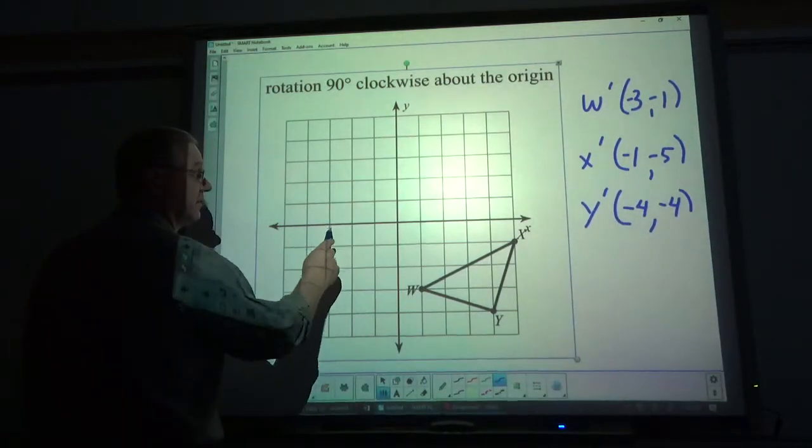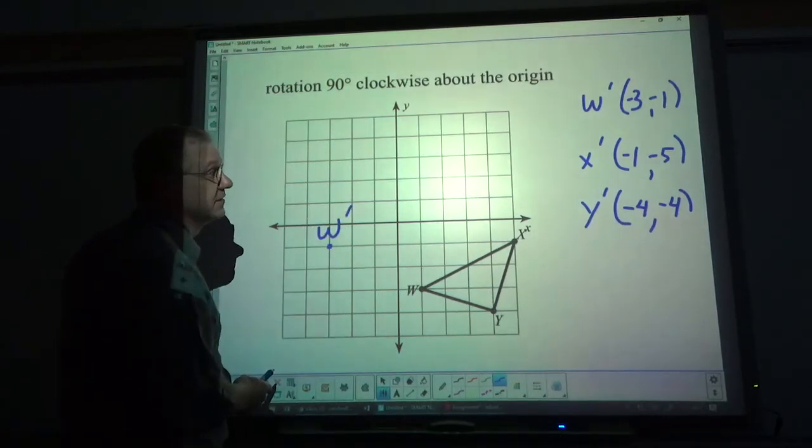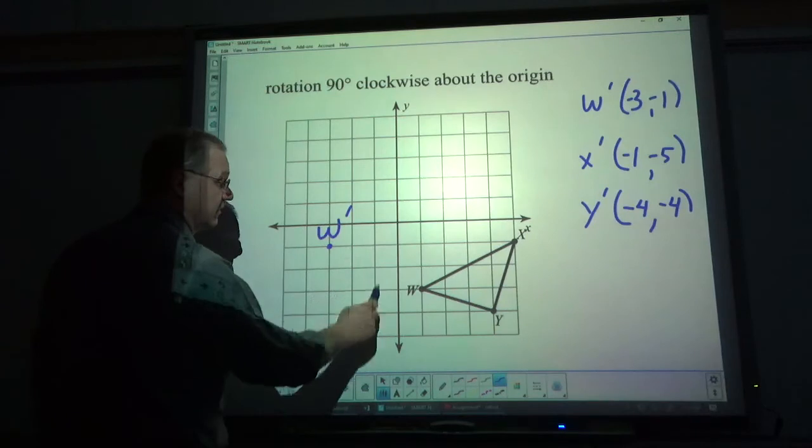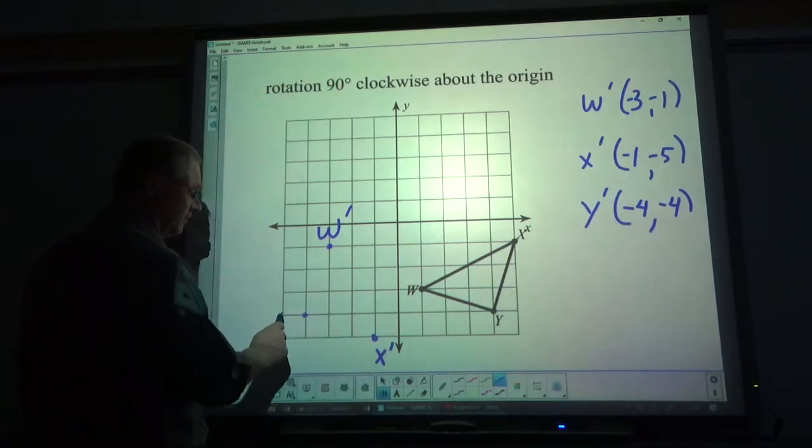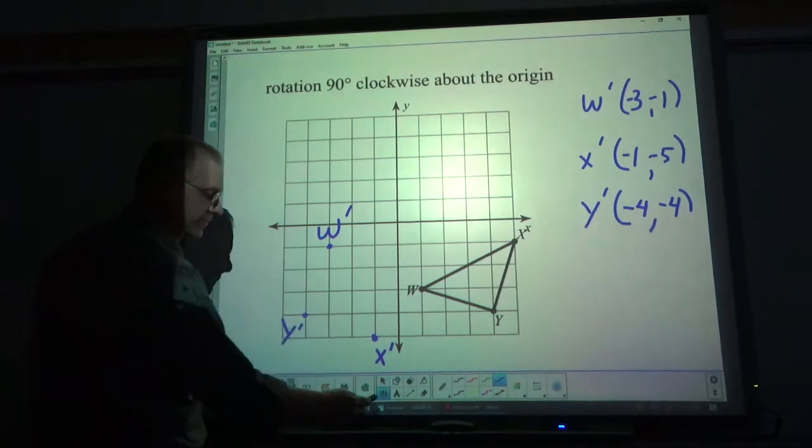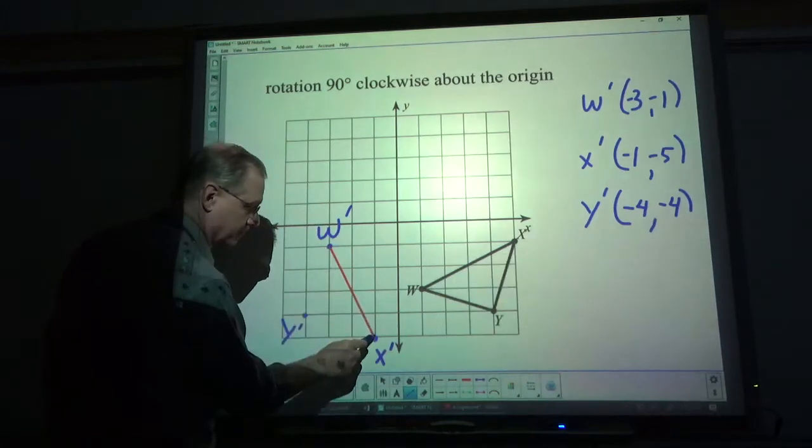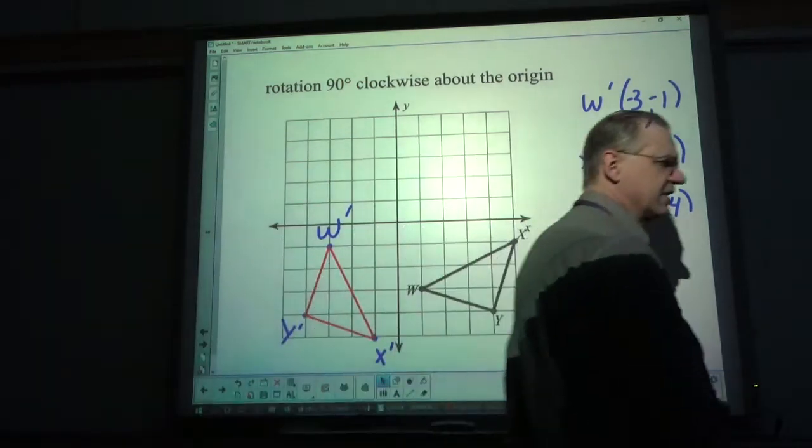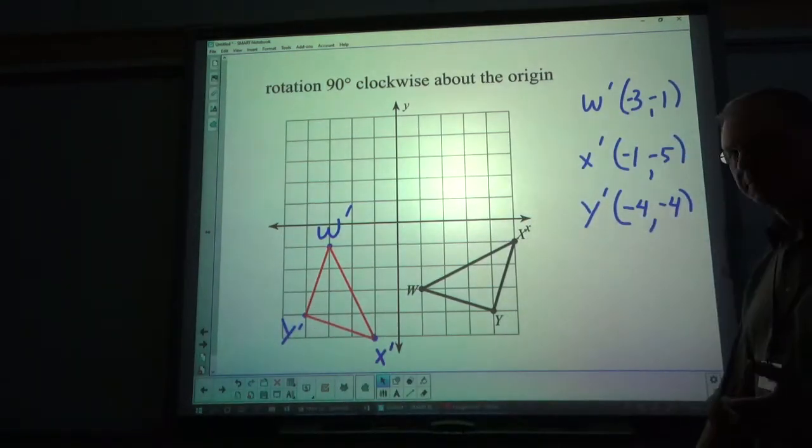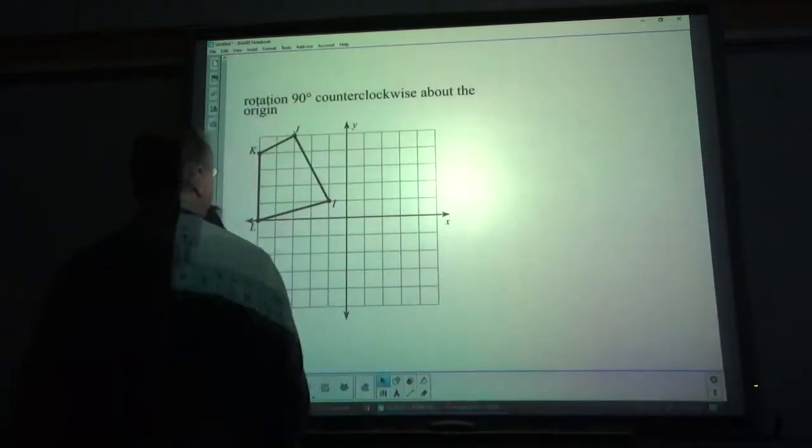W, negative 3, negative 1. X is negative 1, negative 5. And Y is negative 4, negative 4. Connect up. I think all the problems I give you on homework tonight are triangles. But some of the examples are quadrilaterals that I give you today. Let's look at the next type.